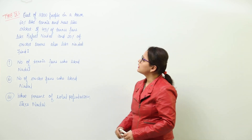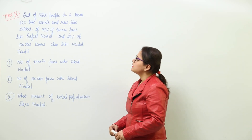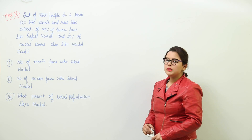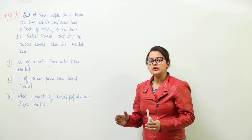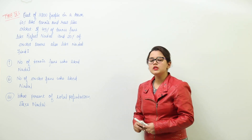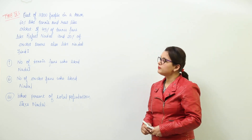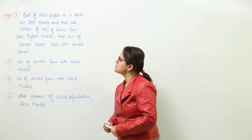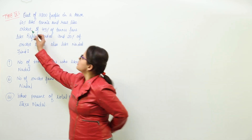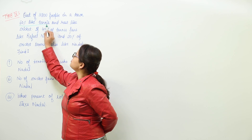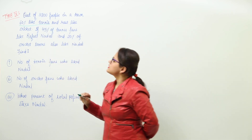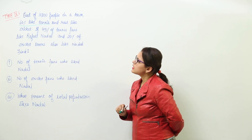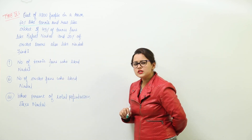Let us do another type. Out of 3200 people living in a town, 60% like tennis and the rest like cricket. How many are left?